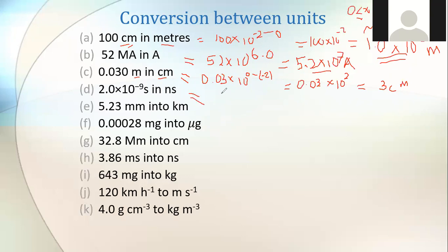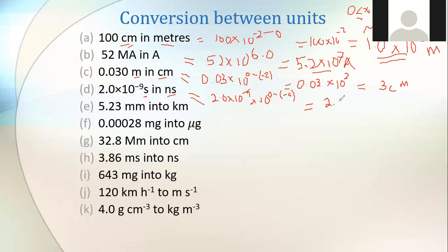For d: convert seconds to nanoseconds. You leave the entire number as is and just add another factor: 10 to the power of (second is zero, minus nano is negative nine) = 10⁹. So 2.0 times 10⁻¹⁹ becomes 2.0 times 10⁻¹⁹ times 10⁹, which gives 2.0 times 10⁻¹⁰ nanoseconds.